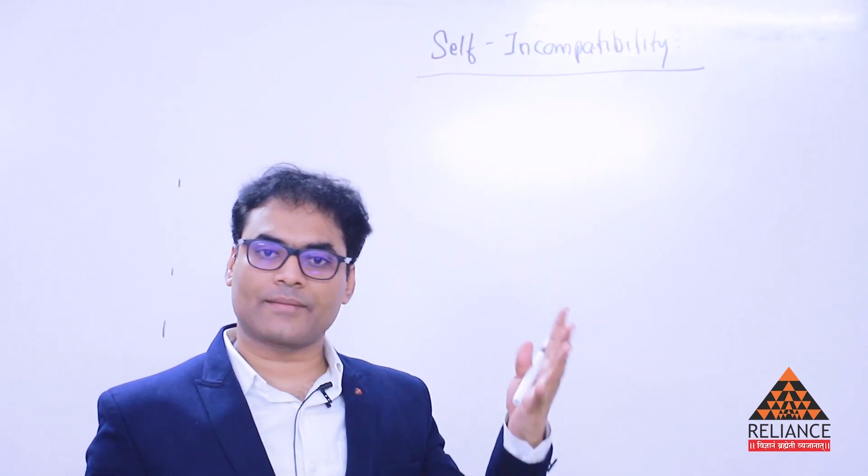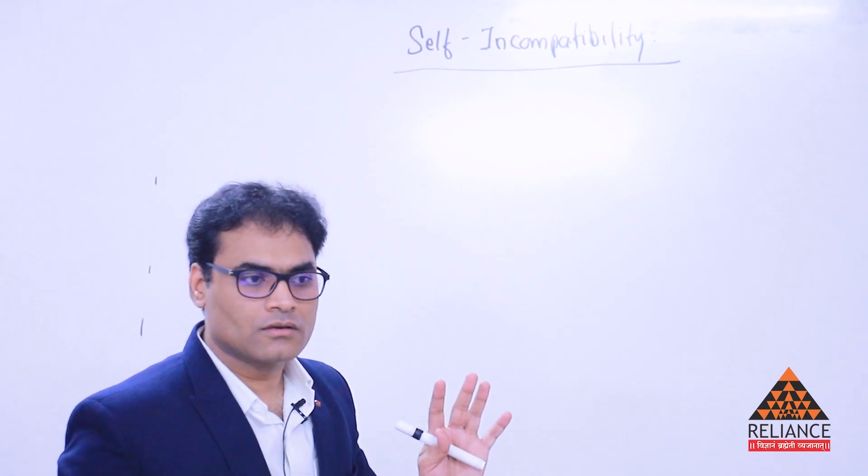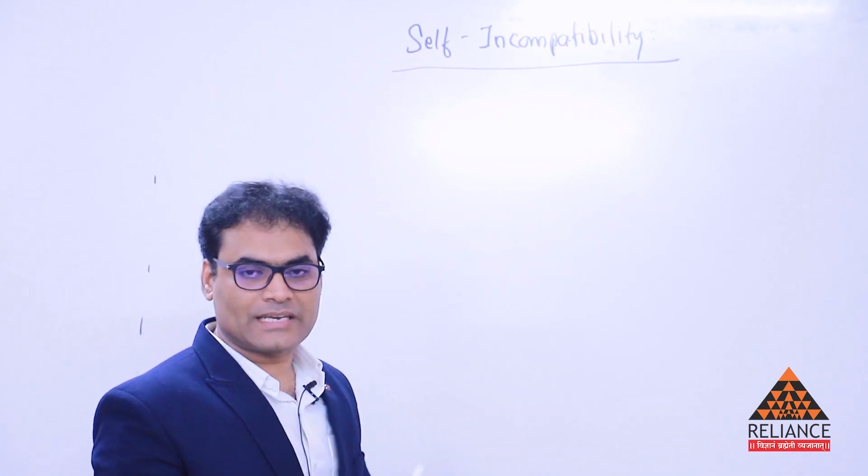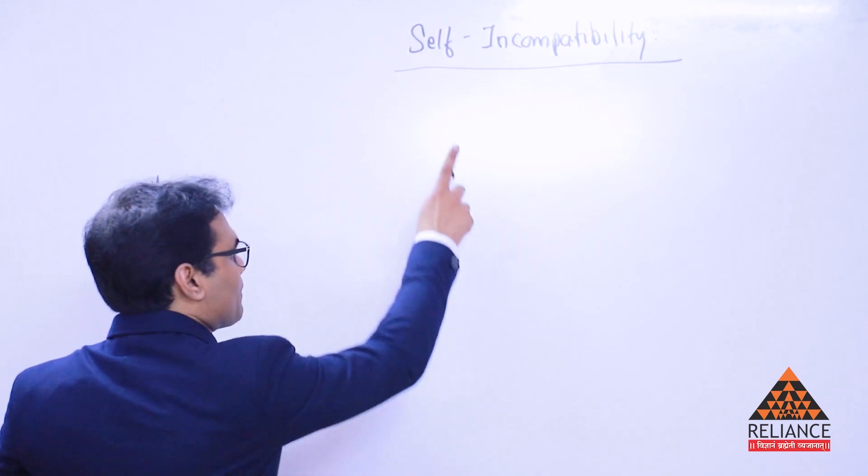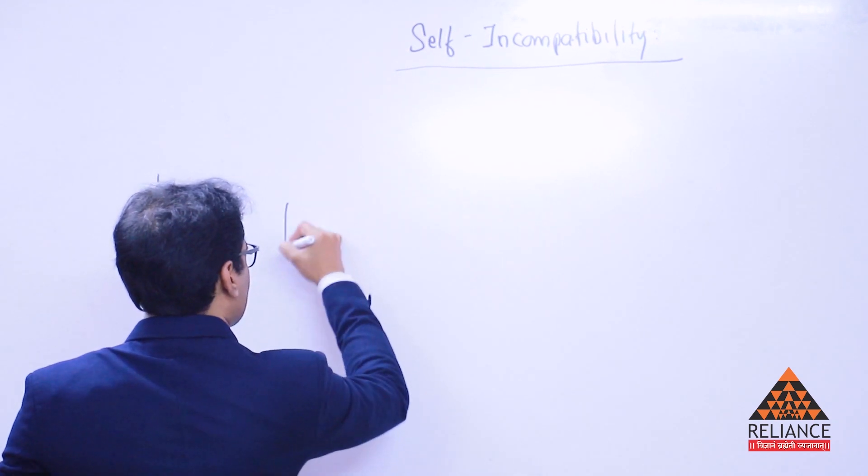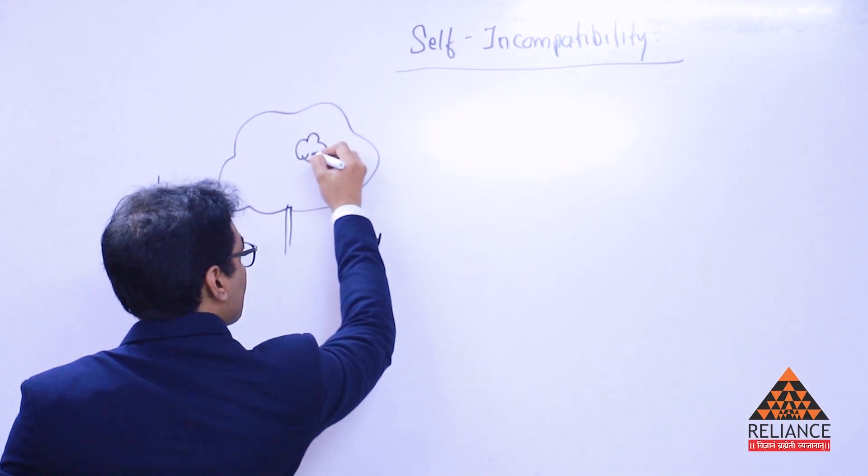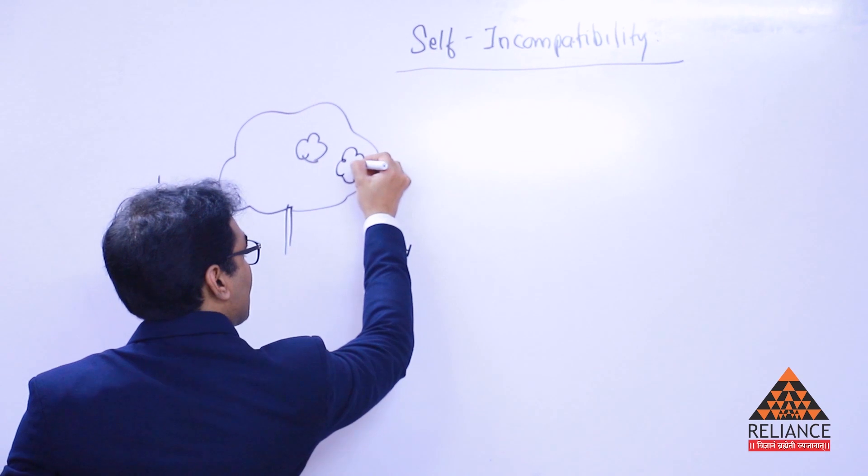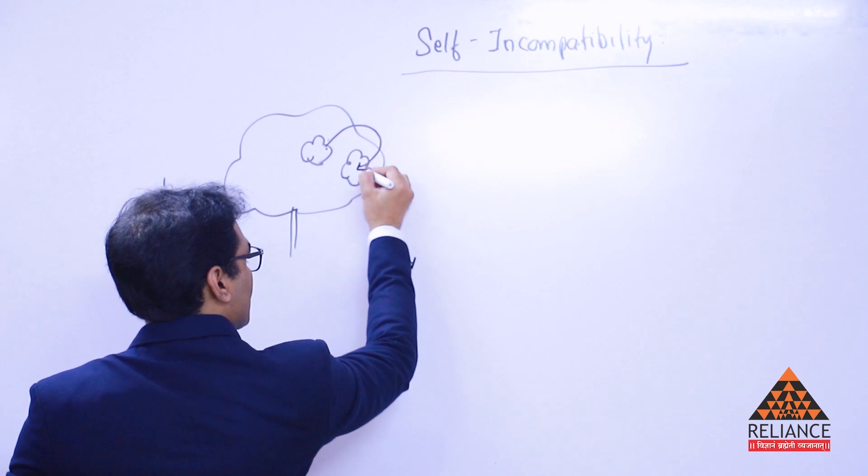Self-incompatibility. How can you really understand this? This will come in your plant's story. So in the plant, sometimes there's a plant. Imagine this plant, I got a flower over here. There's a flower here. There's one more flower here. Now this flower's pollen grains need to go here, or let's say the other way, from here it comes here.